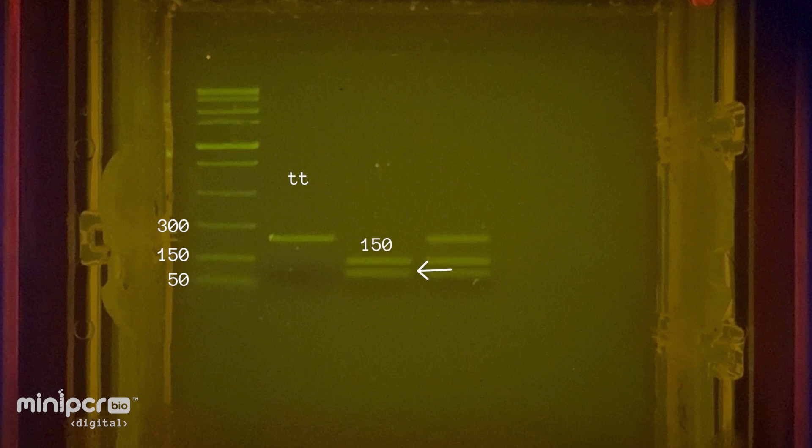This band traveled farther than the 150 base pair band in the ladder, but not as far as the 50 base pair band. Based on the design of our experiment, we can infer that this band contains 100 base pair DNA fragments. This banding pattern means that this sample contains only the taster allele, so this individual has the big T, big T genotype.